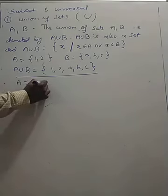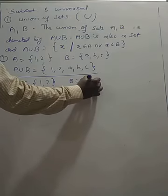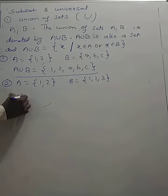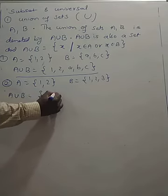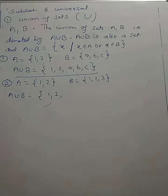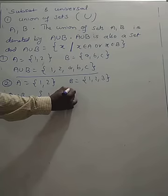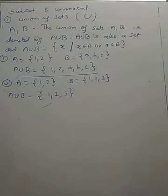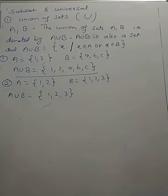Second example: A = {1, 2} and B = {1, 2, 3}. A union B contains elements of A as well as elements of B. Write elements of A first: 1, 2. Then write elements of B — but 1 and 2 are already included in A, so you should not repeat them. You write only 3. Therefore A union B = {1, 2, 3}. Repetition of elements in a set is not allowed.